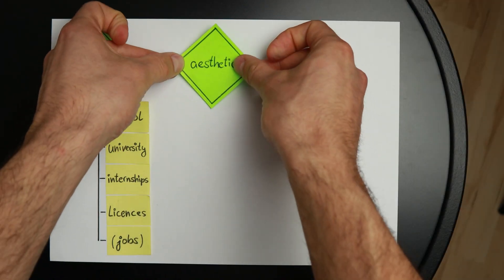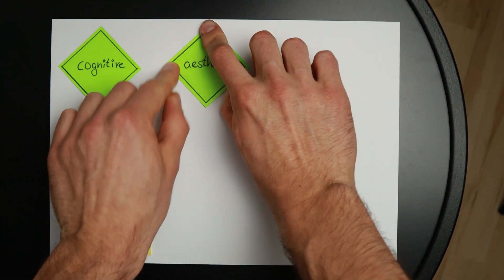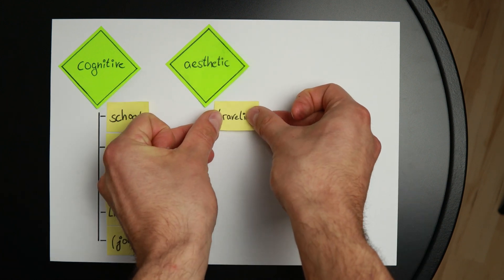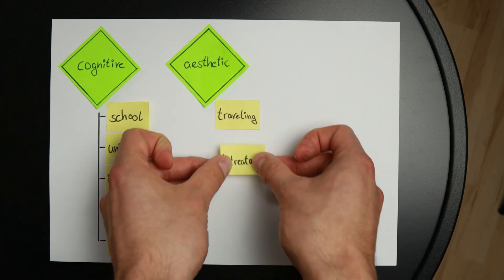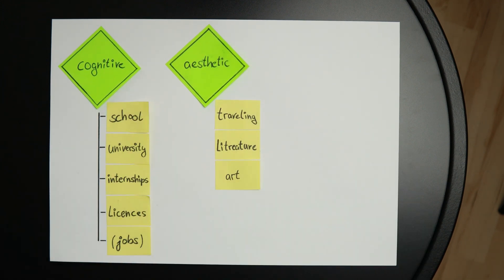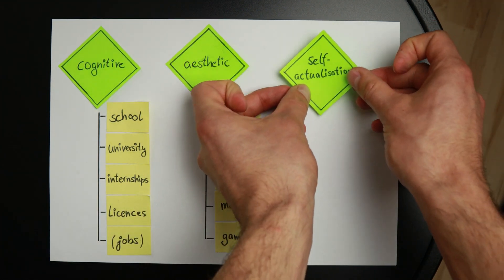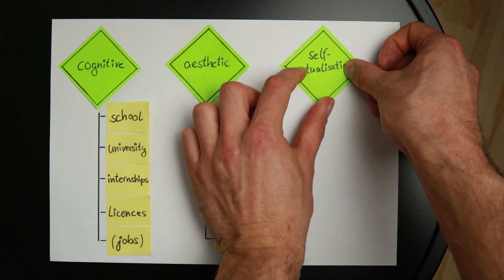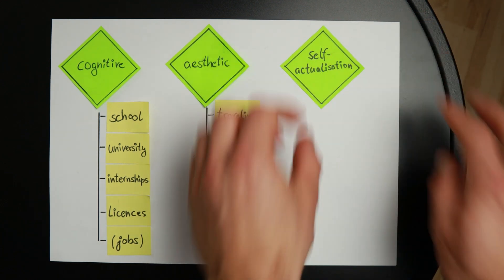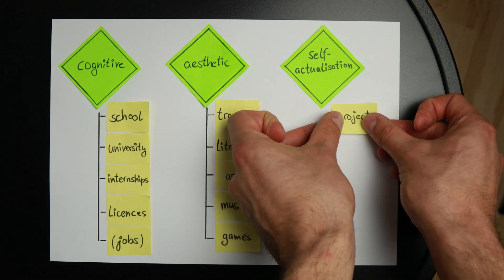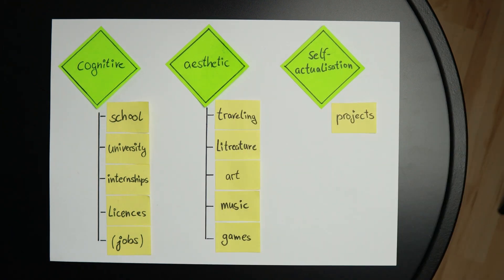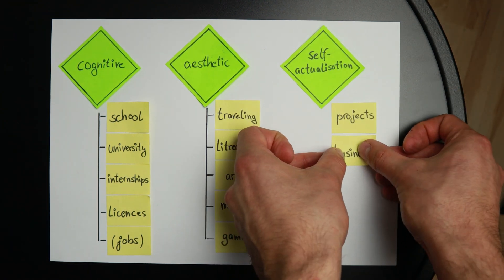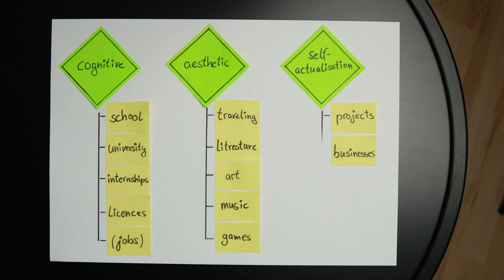The sixth layer is the aesthetic layer. I'm storing everything that's aesthetic to me in there — that's something like traveling, music, art, literature, and games. And last but not least, the seventh layer: self-actualization. This is actually this YouTube channel, or any projects you do on the side, or even businesses you might create — they all start out in this layer.